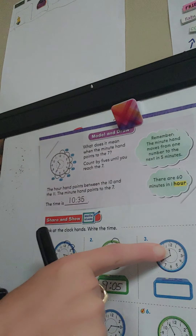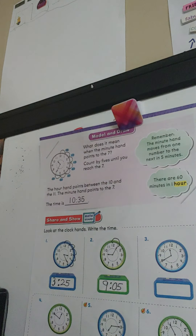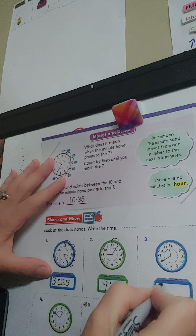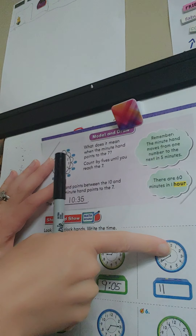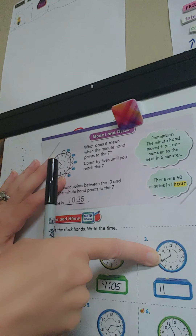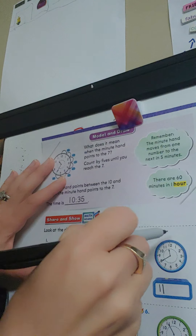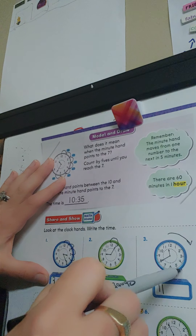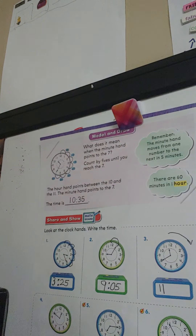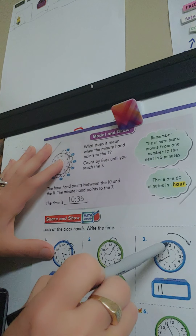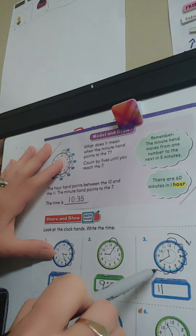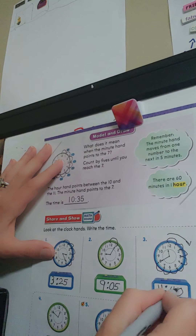Number three. The hour hand — if I run my finger straight up, it's not pointing exactly on the 11 or 12, but I know I'm going to write the number that comes before it, so it is the 11. Then the minute hand is pointing to the 8. We're going to start at the top and go around clockwise — that's what clockwise means, you follow the direction the clock hands go. 5, 10, 15, 20, 25, 30, 35, 40. The time is 11:40.